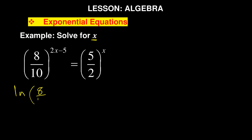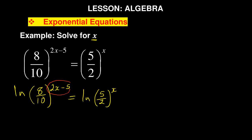So it will be: ln of (8/10) to the power of (2x minus 5) equals ln of (5/2) to the power of x. I introduced ln, and if you remember the laws of logarithms, the power drops down — the exponent will drop down.